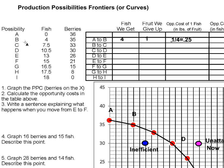From B to C: at B we have 4 fish, at C we have 7.5 fish, so we're getting 3.5 additional fish. We're giving up berries going from 35 down to 33 — so we give up 2 berries. Two divided by 3.5 equals approximately 0.57 berries per fish. So that's like 57 cents per fish, or 0.57 berries per fish — a higher opportunity cost than moving from A to B.